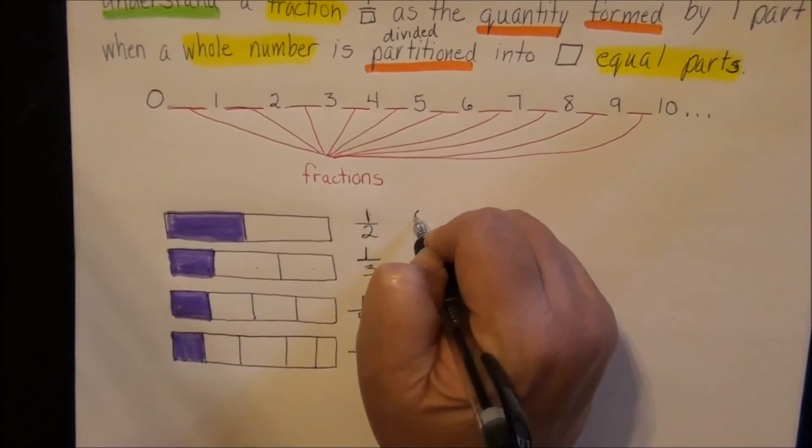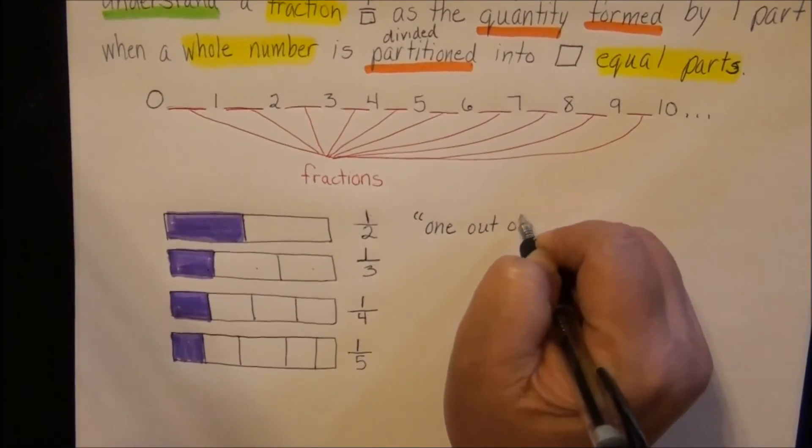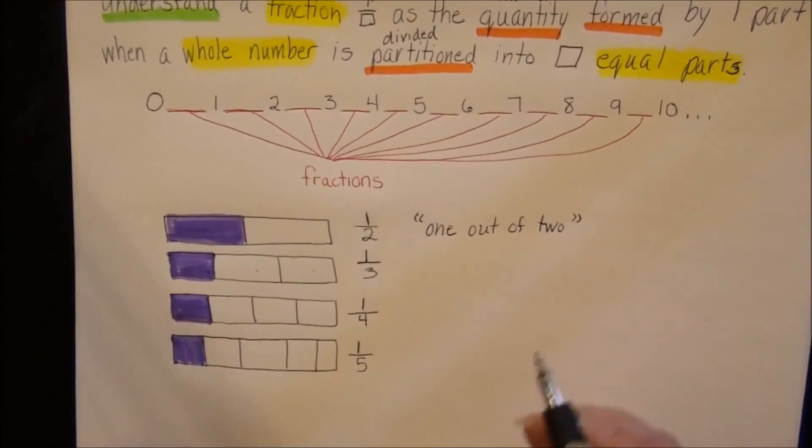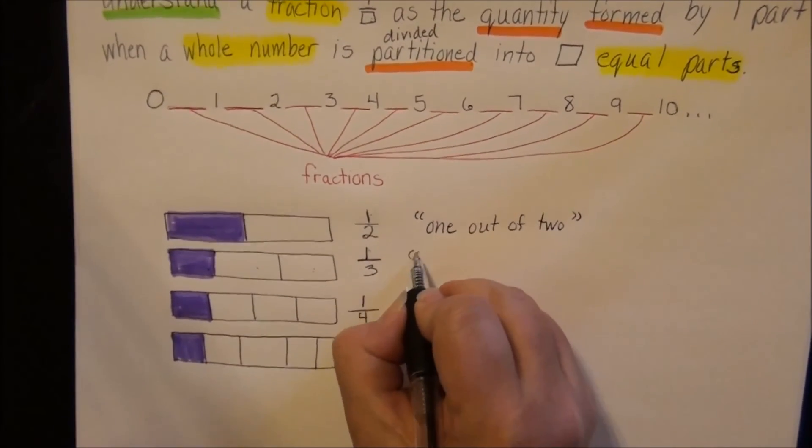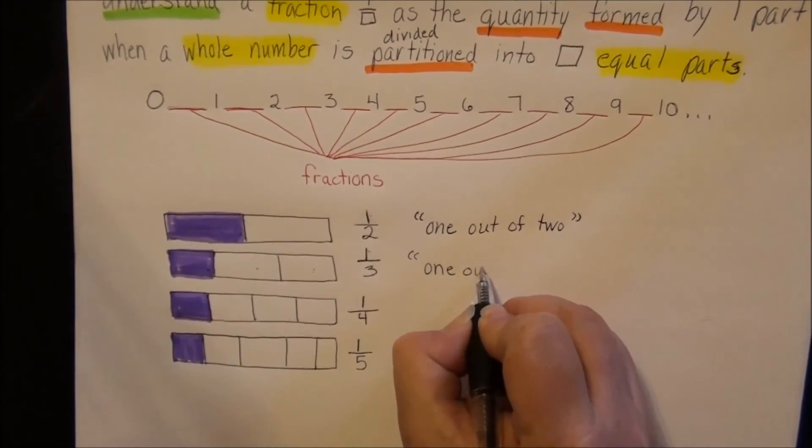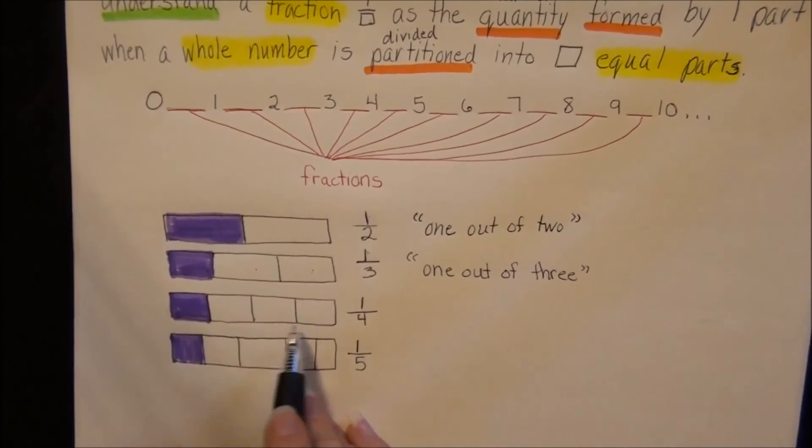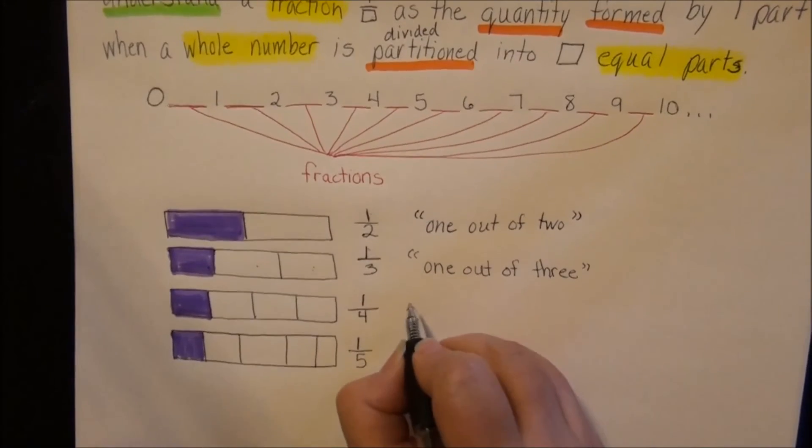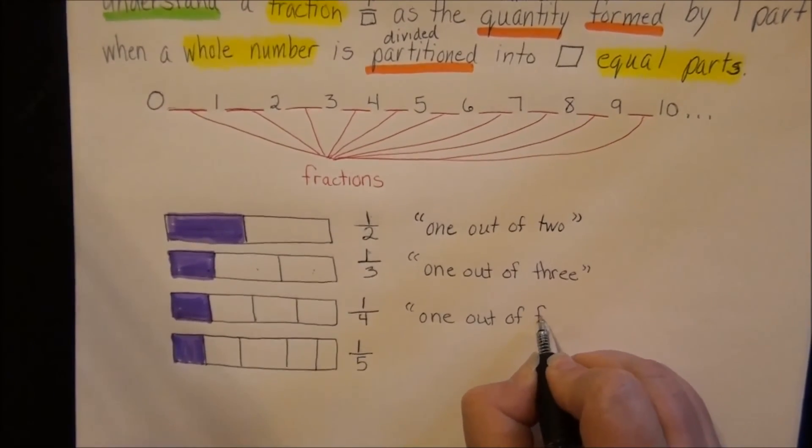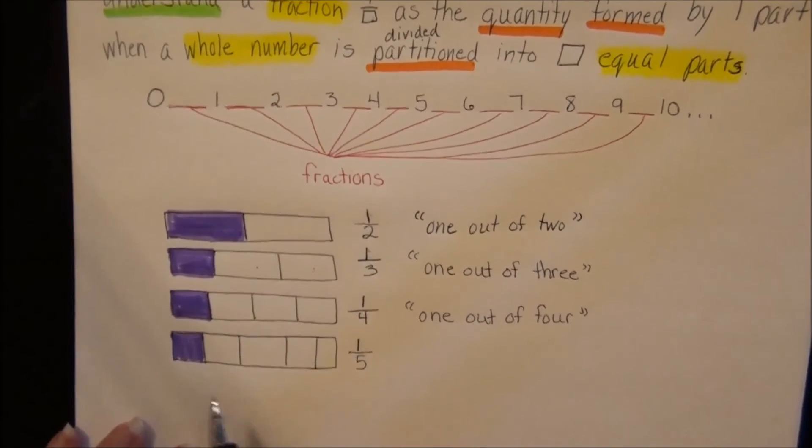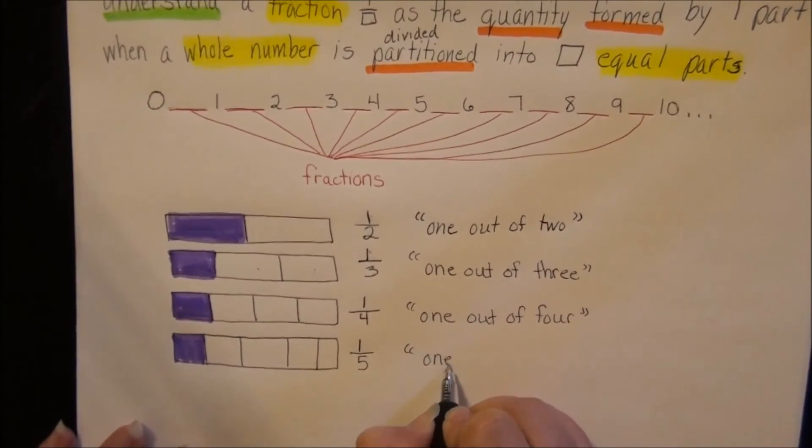So we have one out of two. One out of two equal parts is colored in. We say one out of two. We have three equal parts, one of them is colored, so one out of three. And then we have four equal parts, one is colored, so that's one out of four. Five equal parts, one is colored in, so we say one out of five.